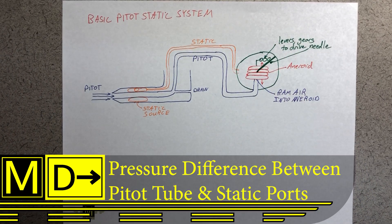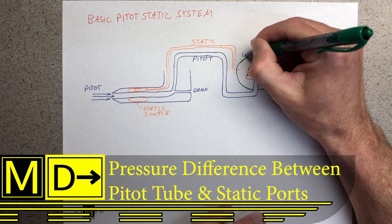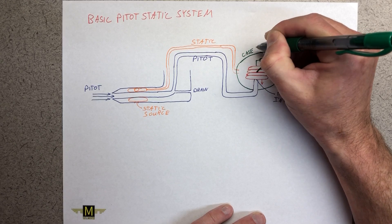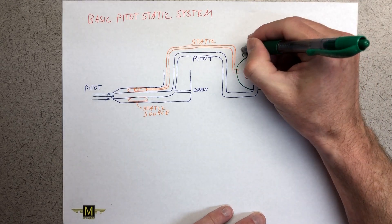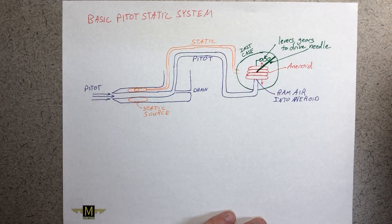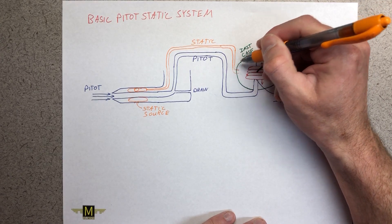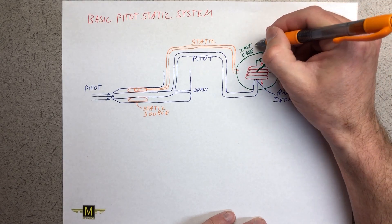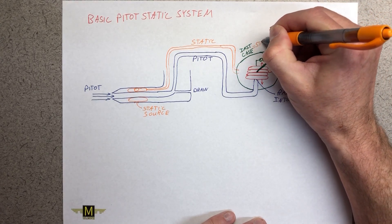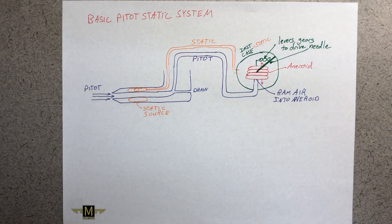The airspeed indicator is a differential pressure gauge that measures the difference between the ram airspeed of moving forward and the static air pressure around your plane. Air enters the front of the pitot tube and expands an aneroid diaphragm, kind of like blowing up a balloon. The static port connects the air inside the instrument to the outside of the aircraft, and this difference in pressures gets translated into airspeed.